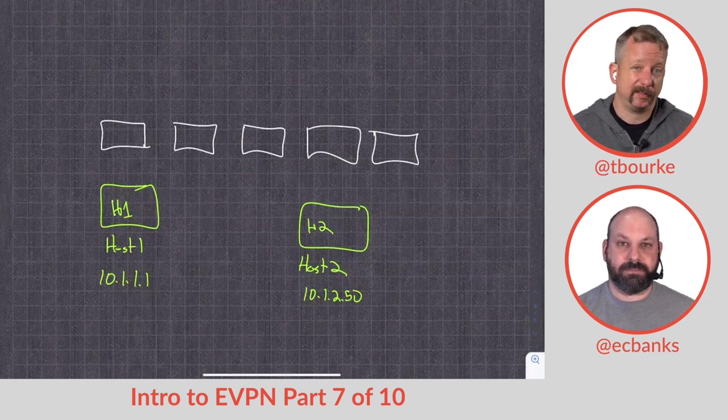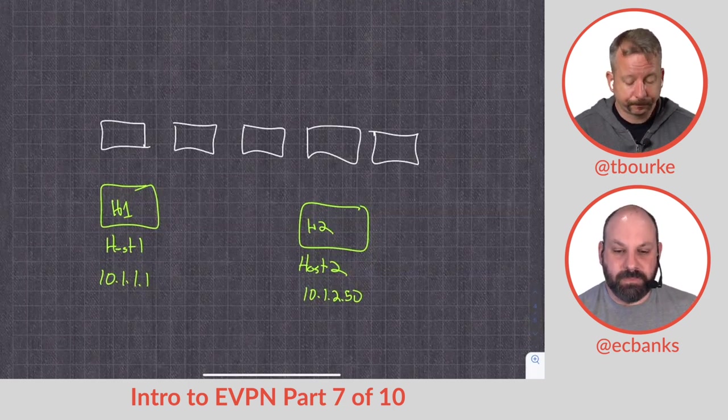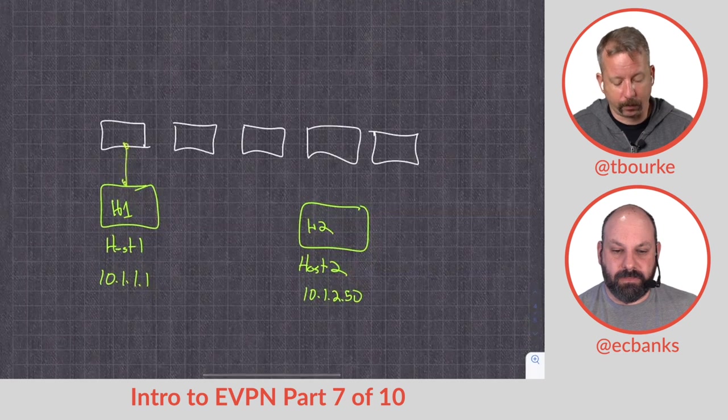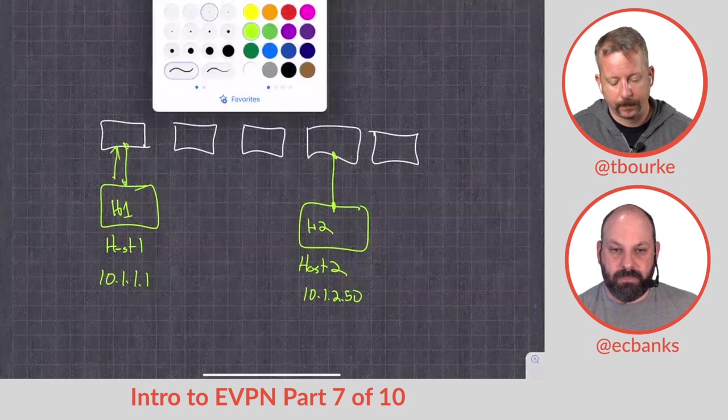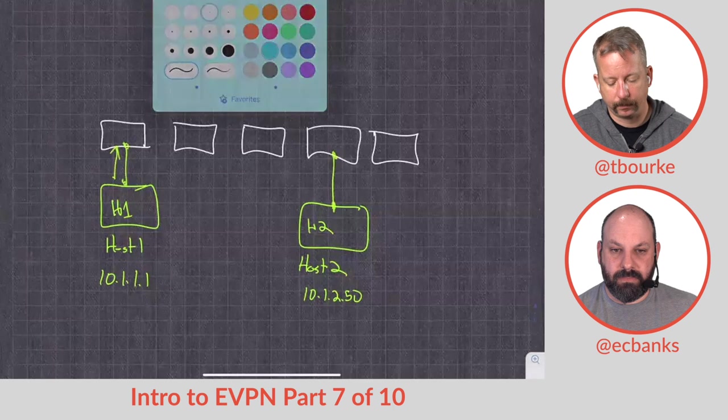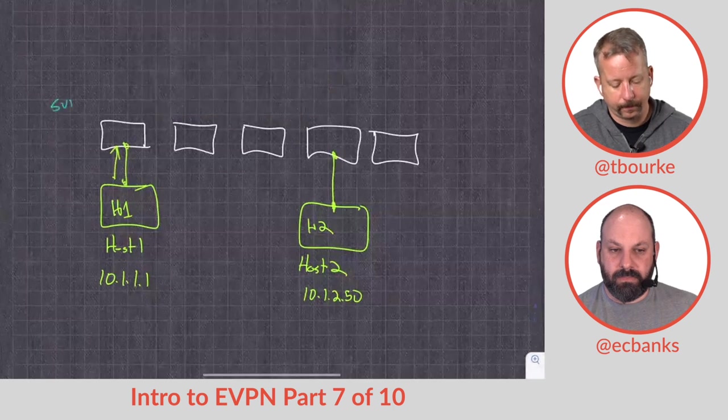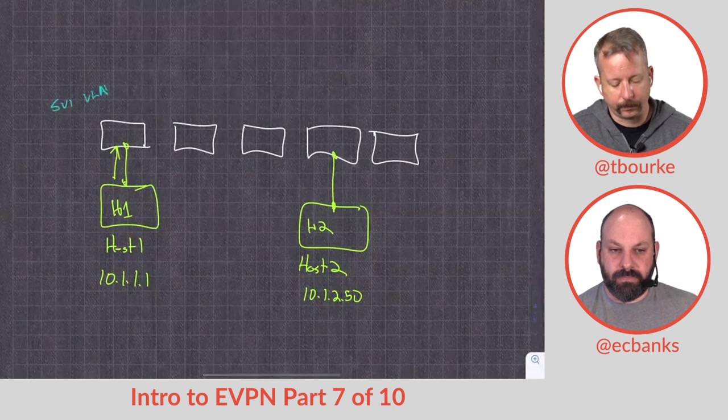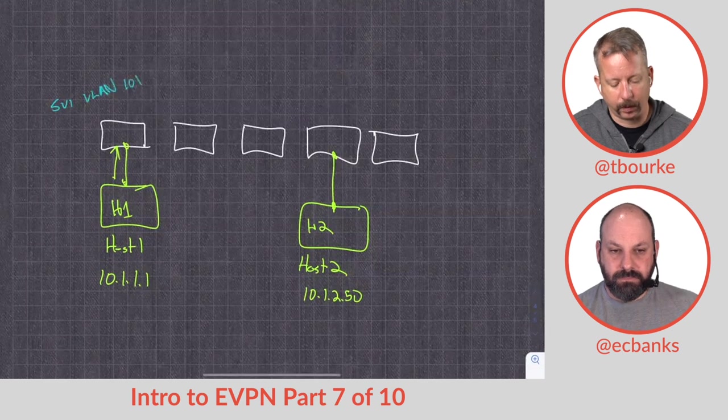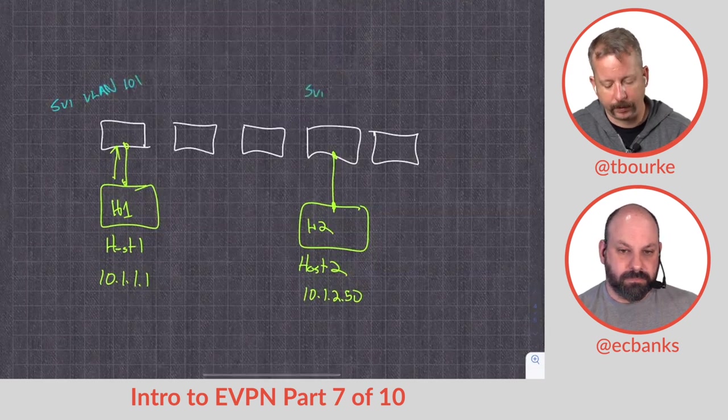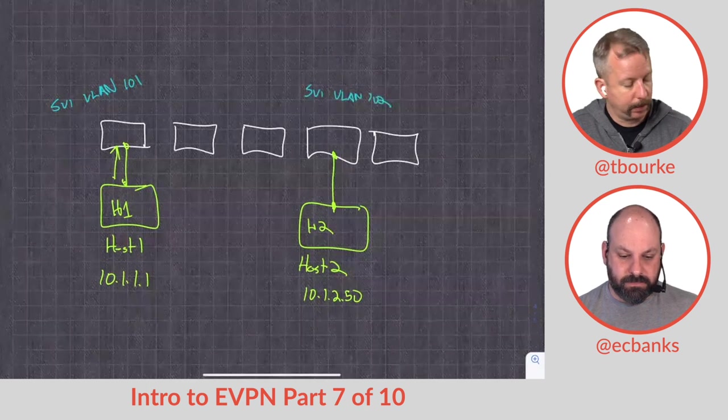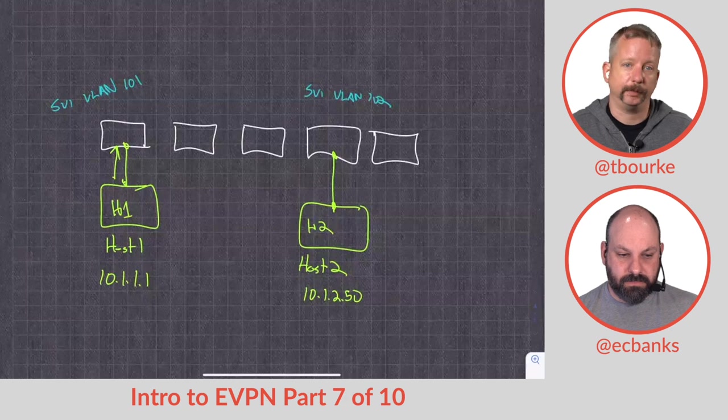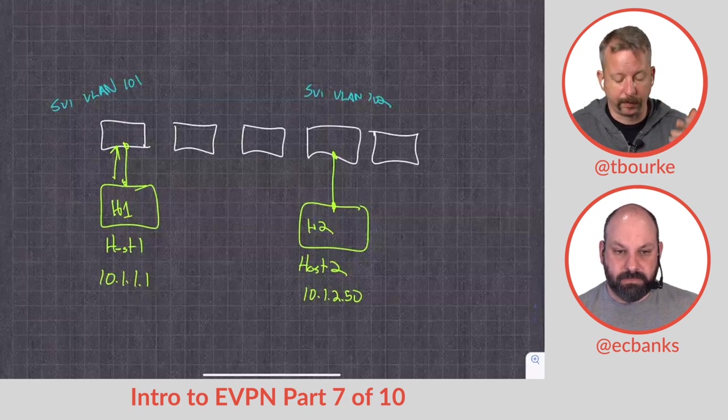So if I want to be able to have host one to communicate with host two, I need to go through my default gateway, which is going to be locally an SVI. So VLAN 101, this will be the SVI for VLAN 102. And this is going to be anycast. So it's going to be across all of our leaves. So the same IP address.